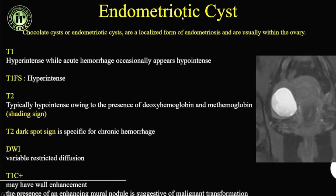The typical appearance of endometriomas: T1 bright because they are blood products, and also bright on T1 fat sat — so our typical description is hyperintense on T1 and not suppressed on T1 fat sat, suggestive of blood products. T2 positive shading sign is important — because these are blood products in different stages of degradation from repeated cyclical bleeding, they layer inside and give a gradual level on T2 weighted sequence, called the positive shading sign.